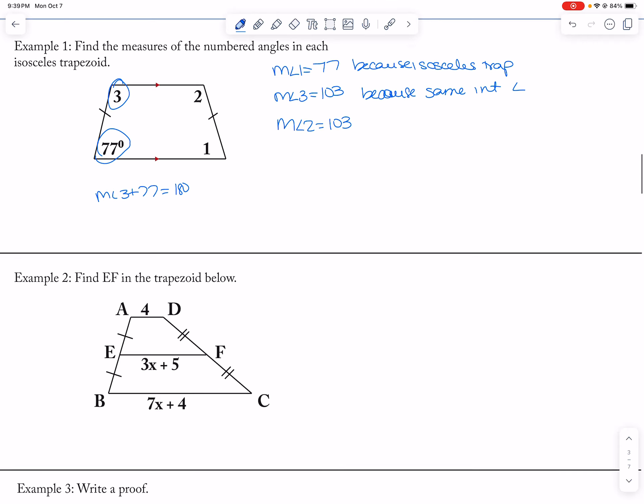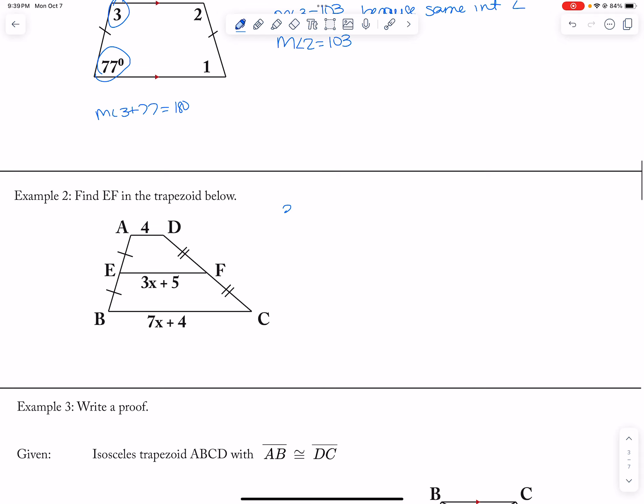Okay, and then we're going to use the mid-segment idea. So that means that 3x plus 5, which is in the middle, is equal to 1 half times 4 plus 7x plus 4. So then 3x plus 5 is equal to 1 half 7x plus 8.